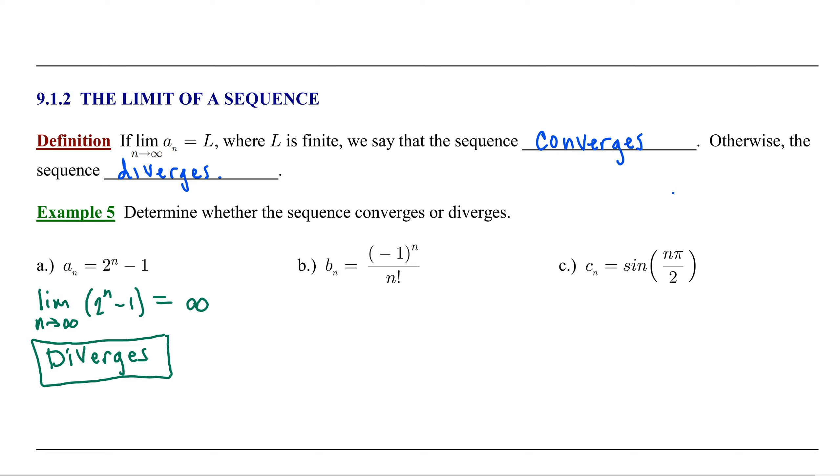For example b, we have b sub n equals negative 1 to the nth power over n factorial. Notice the numerator causes each term to alternate in sign, so this is an example of an alternating sequence. The denominator is n factorial: n times n minus 1 times n minus 2, and so on and so forth.